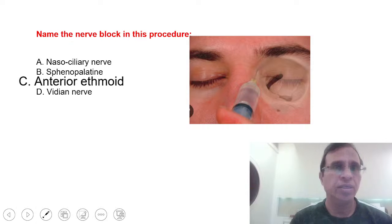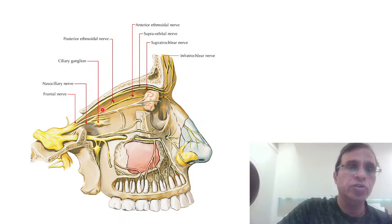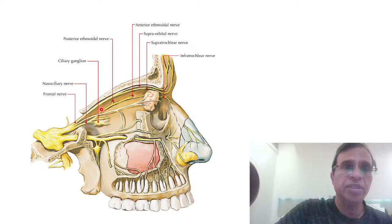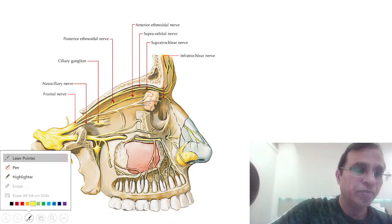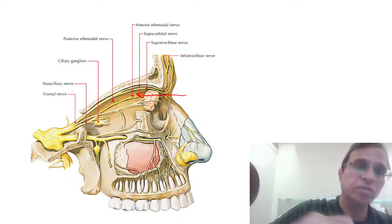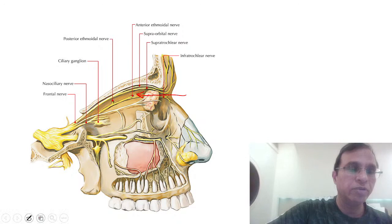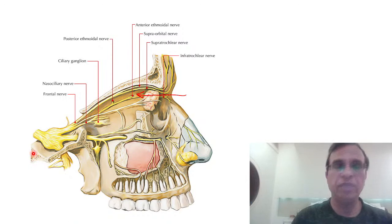I'm pretty sure most of you know this. This diagram shows the nasociliary nerve with two branches going in the orbit: the post-ethmoid nerve and the anterior ethmoid nerve. You can see the anterior ethmoid nerve piercing through the anterior ethmoid foramen. When you inject from here and go 1.2 centimeters deep, you encounter this nerve and it gets blocked.